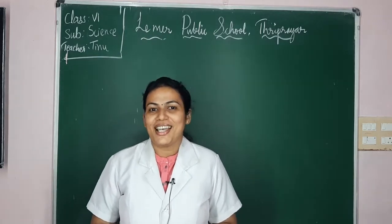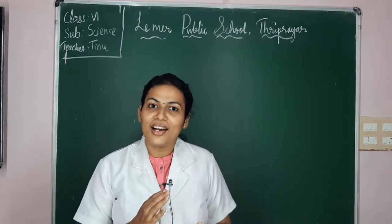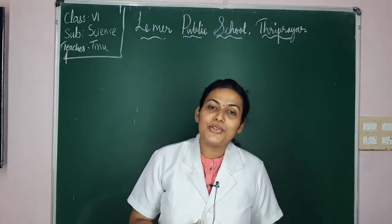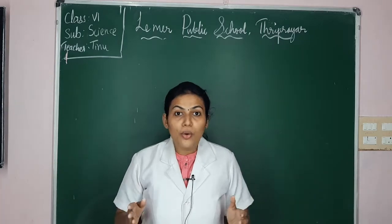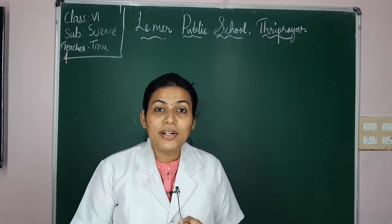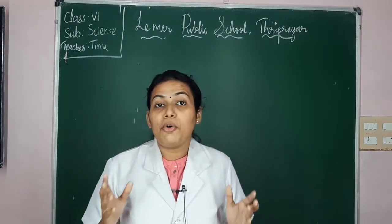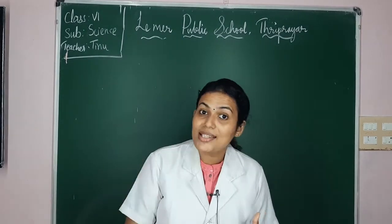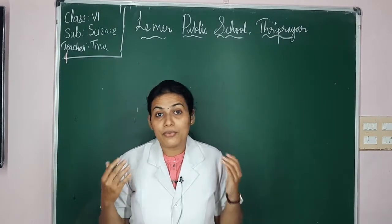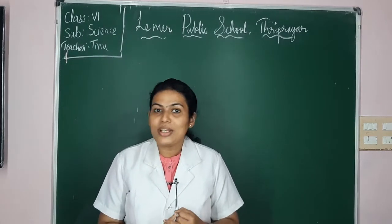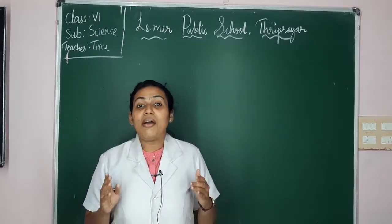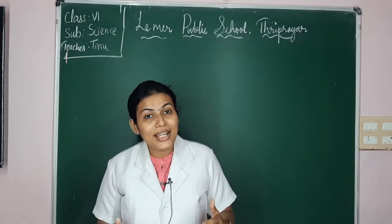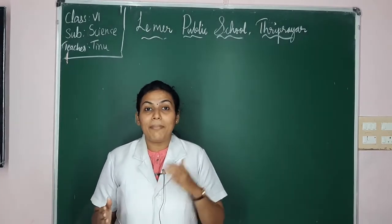Hello, dear boys and girls, welcome to your science class. Last class we started Chapter 11 and completed one topic about light. Today we are going to learn about shadow and reflection. You are already aware of the properties of light and sources of light. We also learned how to divide objects based on whether light passes through them: transparent, translucent, and opaque materials. We also learned that light travels in a straight line.